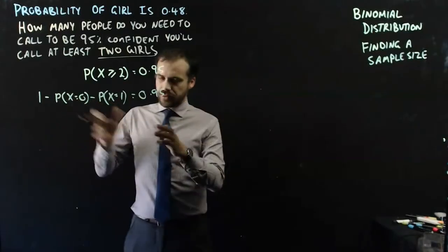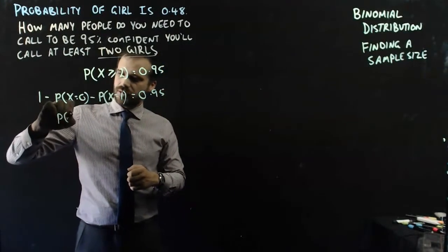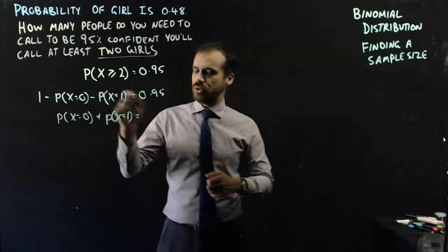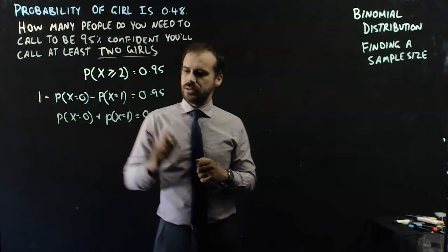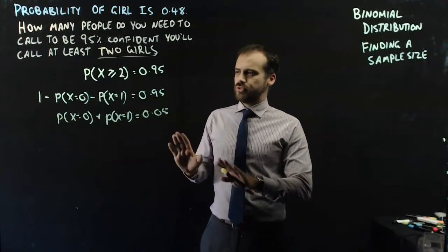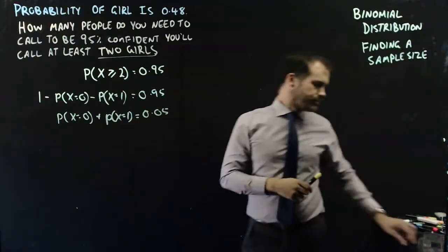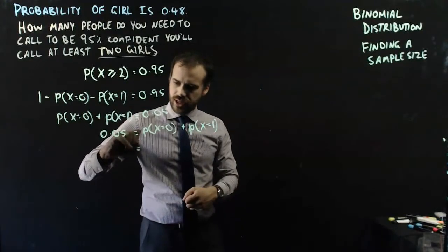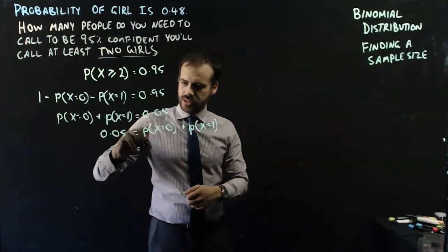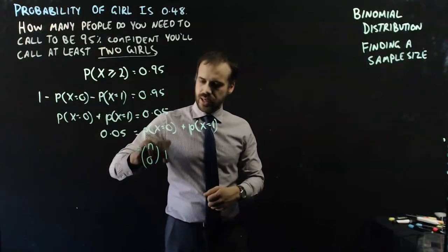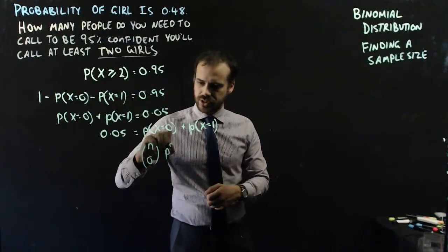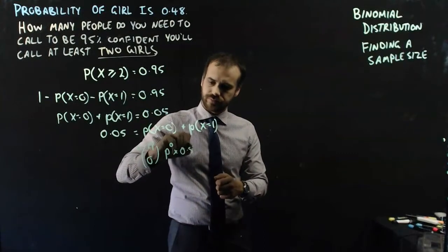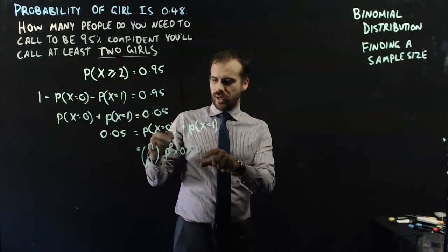We can say that P(x≥2) = 1 minus P(x=0) minus P(x=1). With some manipulation, P(x=0) plus P(x=1) must equal 1 minus 0.95, which is 0.05. Running through it step by step: P(x=0) is nC0 times p to the power of 0 times 1 minus p, which is 0.52, to the power of n.